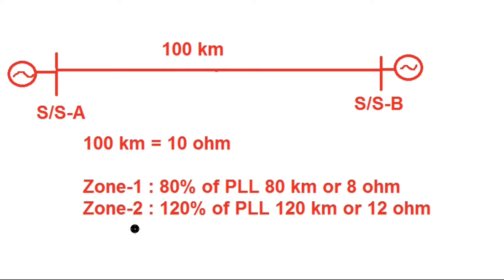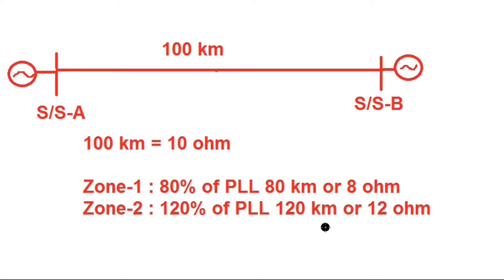For zone 2, since it is a single circuit line, the reach is set at 120% of the protective line length to cover faults at the far-end substation. So zone 2 reach is 120 kilometers or 12 ohm in terms of impedance.